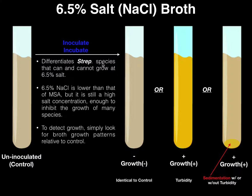The procedure is pretty simple. Here's the uninoculated broth before we do anything to it. We're going to inoculate and incubate as normal. When we pull it out of the incubator two days later, like we normally do, we're basically going to look for growth patterns.